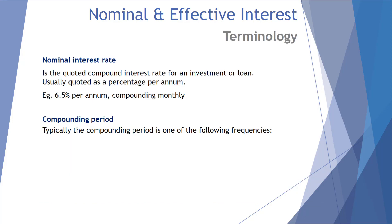A bit of terminology first. Nominal interest rate is the quoted compound interest rate for an investment or loan, usually quoted as a percentage per annum. For example, 6.5% per annum compounded monthly. The fact that it's compounded monthly implies that it's a nominal interest rate.